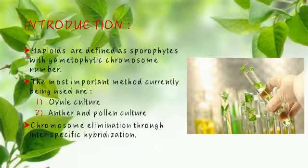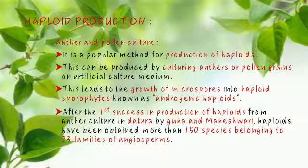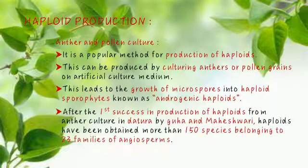Chromosome elimination through inter-specific hybridization is another approach. Anther and pollen culture is a popular method for production of haploids. This can be achieved by culturing anthers or pollen grains on artificial culture medium, which leads to the growth of microspores into haploid sporophytes known as androgenic haploids.